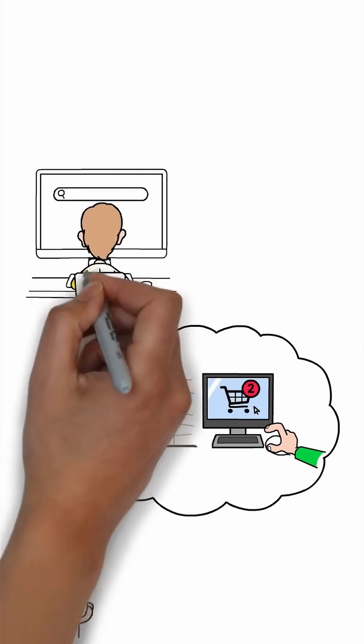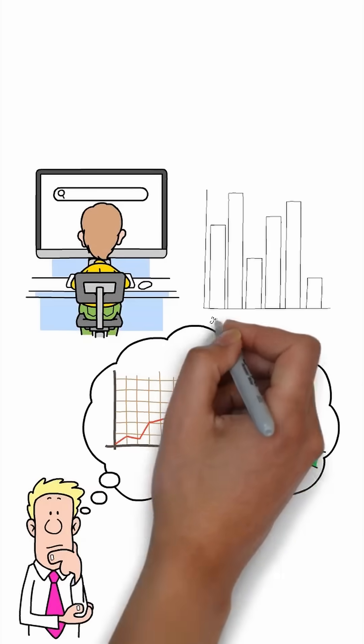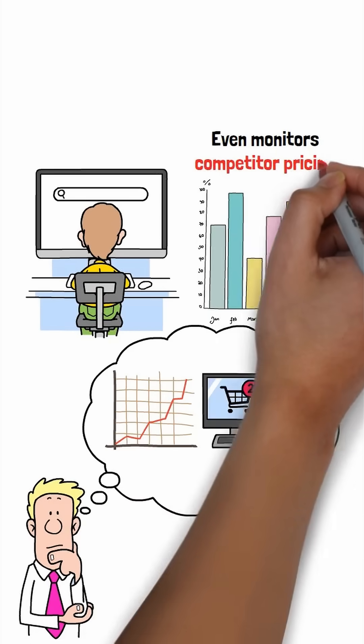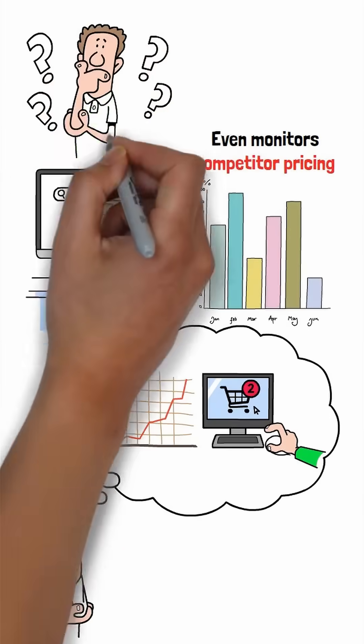But big data analyzes customer browsing patterns, tracks social media trends in real-time, and even monitors competitor pricing. All to predict which products will trend tomorrow.